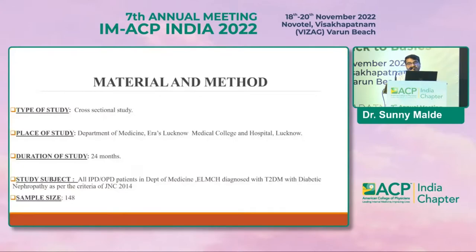The study was a cross-sectional study conducted at the Department of Medicine, Eras Lucknow Medical College, with a duration of 24 months. All IPD and OPD patients diagnosed with type 2 diabetes mellitus with diabetic nephropathy as per JNC criteria were included, with a sample size of 148.